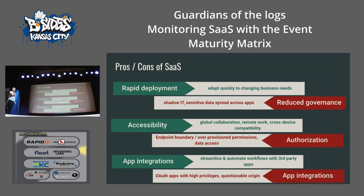Integration is powerful: in the on-prem world you had to manually move data between applications, but now it's as easy as point-and-click to connect apps and data just moves around. The drawbacks involve permissions — you need to know what permissions an application should have and understand your scope. You also need to consider origin: do you trust where your apps are coming from, and how do you validate those supply chains?